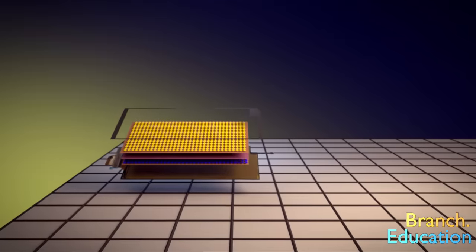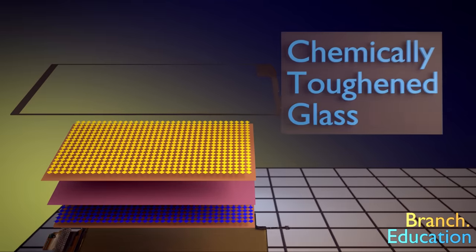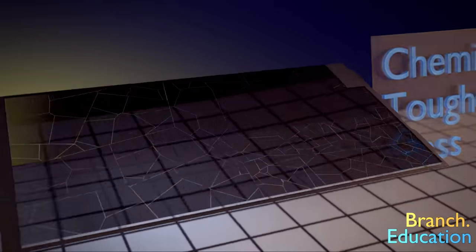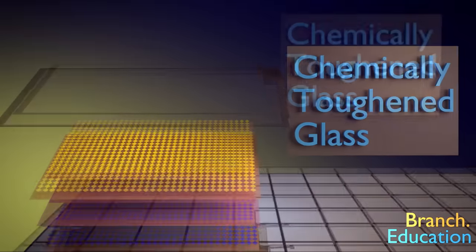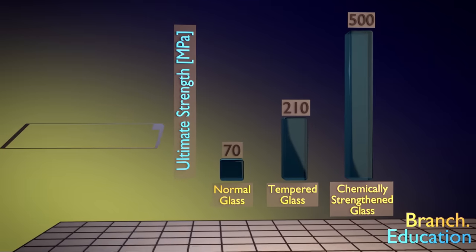So let's get into the layers of a touchscreen display. On the top we have the protective glass. A lot of us have had a screen shatter, but think about how many times you've dropped it and it hasn't. That's because a smartphone's glass is over five times stronger than normal glass.